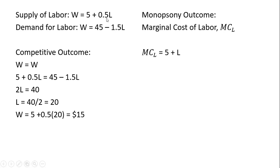But the 0.5 here, if we multiply that by 2, it's just 1. So the marginal cost of labor looks like the supply of labor equation with a slope that is 2 times as steep.